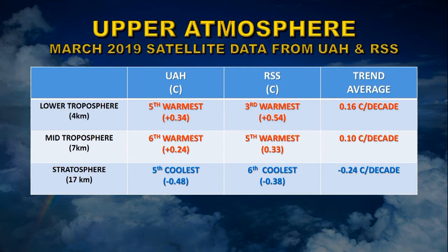The stratosphere, on the other hand, is cooling. The average altitude here is about 17 kilometers. UAH found it was the fifth coolest measurement on record with a temperature differential of minus 0.48 degrees centigrade. RSS found it was the sixth coolest with a temperature differential of minus 0.38 degrees centigrade. The overall trend is minus 0.24 degrees centigrade per decade, putting overall cooling over the last 40 years at about 0.9 degrees centigrade.